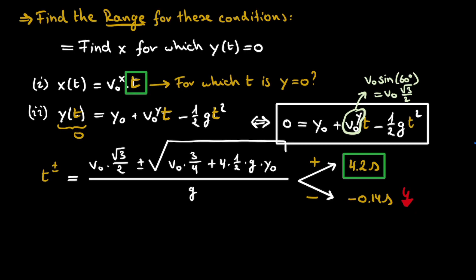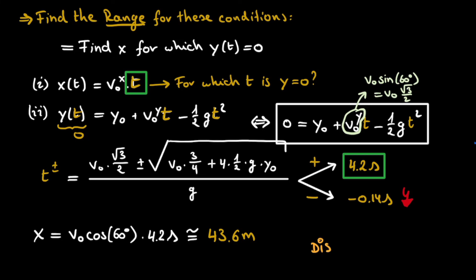Filling in t equals 4.2 seconds, we get that x — the distance at which the ski jumper reaches the ground — equals the initial velocity in the x direction, which is the magnitude of the initial velocity multiplied by cosine of 60 degrees, multiplied by 4.2 seconds. Recalling the initial velocity found in the previous part, we find a final distance of 43.6 meters. This means that given the specifics of this ramp, if a ski jumper does nothing but stand still and lets gravity do its work, they will land at a distance of approximately 43 meters.